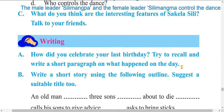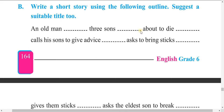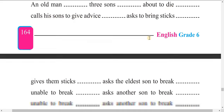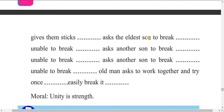Now write a short story using the following outline and suggest a suitable title. The outline: an old man with three sons is about to die and calls his sons to give advice. The moral is already given. The title of this story is 'A Father's Advice.'